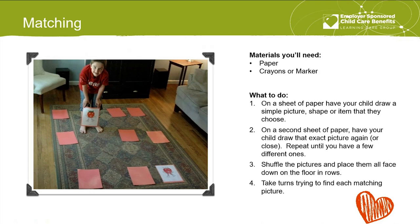Large motor matching: we can take a simple matching game and add some movement. Use paper, crayons, or markers. Have your child draw a simple picture, shape, or item on a sheet of paper, then draw the exact same picture on a second sheet. Repeat until you have a few pairs. Shuffle the pictures and place them face down on the floor in rows. Take turns — you and your child get up and walk around, flipping them over to find the matches. It adds movement into your typical matching game.